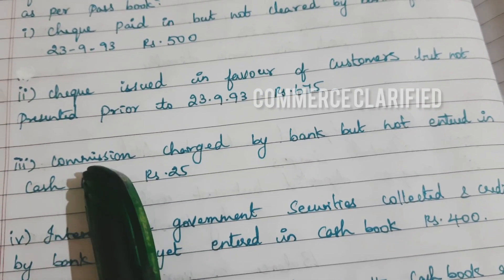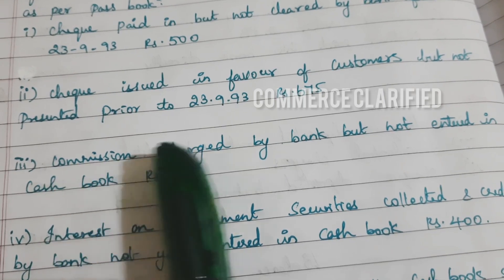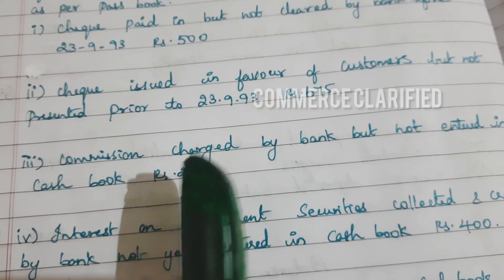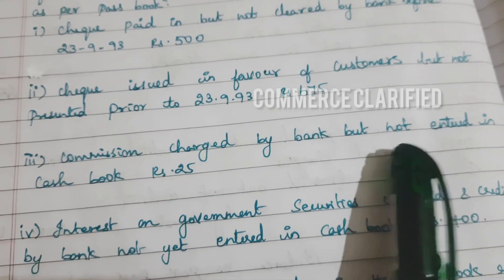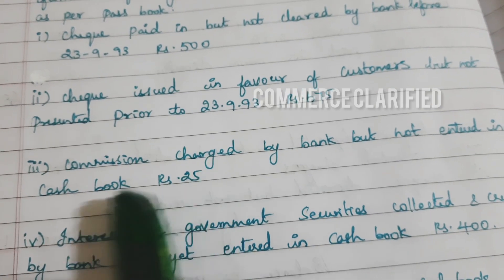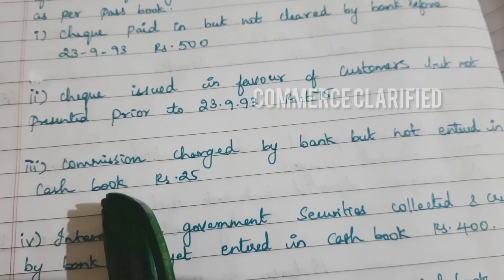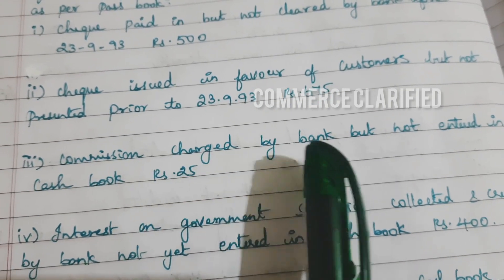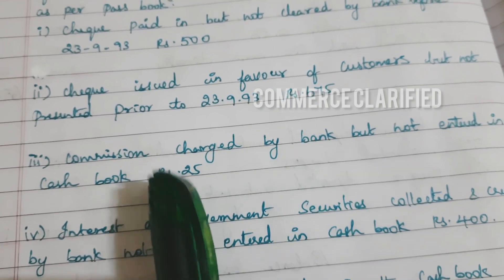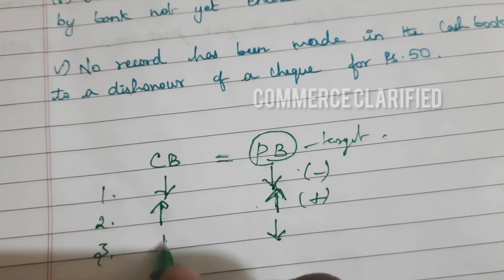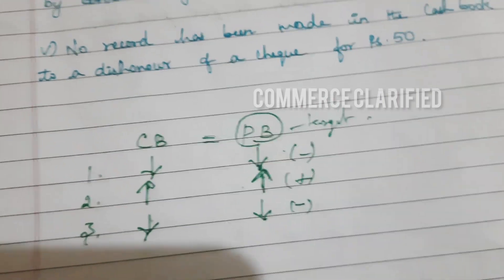Banker's commission charge by bank — bank makes insurance. There is 25 rupees this time, but you have not entered it in cashbook. You'll enter it in the cashbook. Now, the bank does the insurance, so if the bank balance is less, you can do the cash balance. So minus.